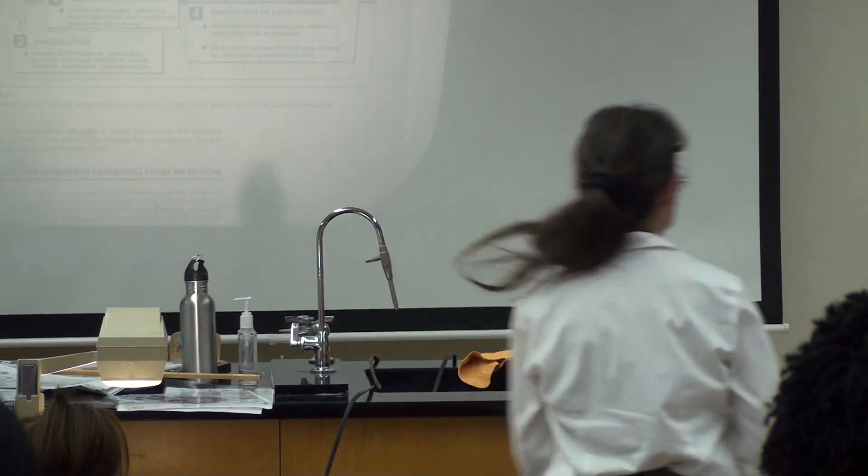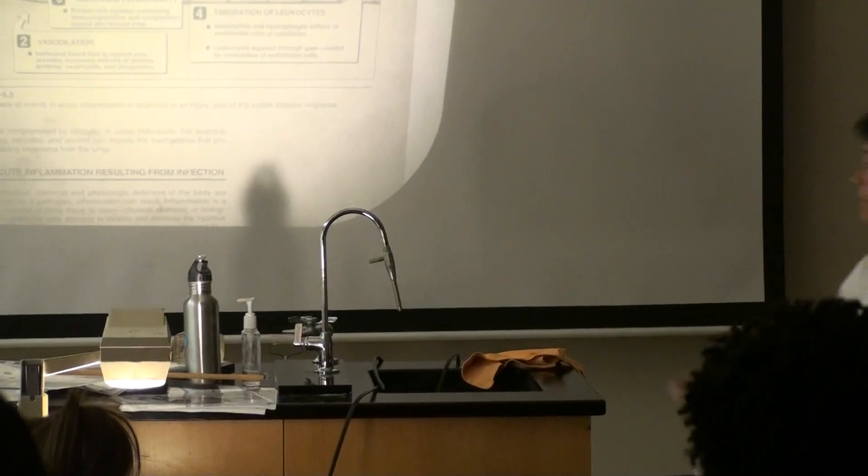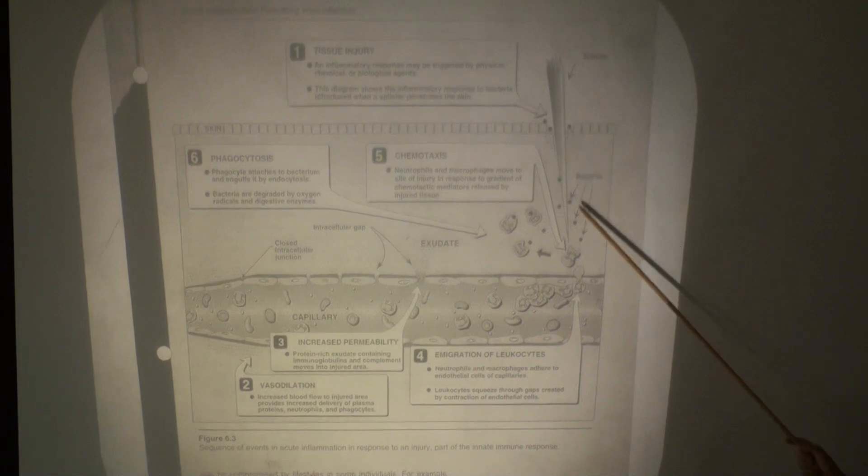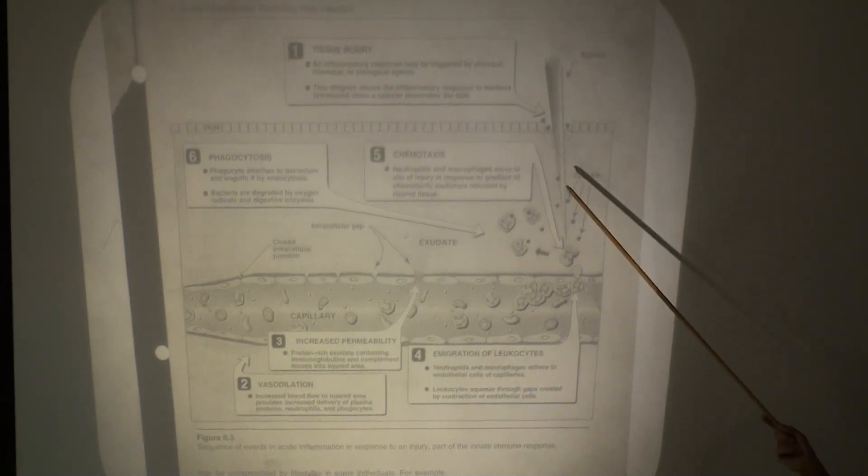This is kind of the classic cartoon for inflammation. In this example, we have a wooden splinter that's contaminated with bacteria that's pierced the skin and introduced these bacteria into the deeper tissues. As a result of the tissue damage and as a result of some of the microbial products, our cells will release chemical messengers.